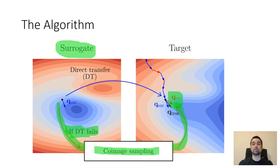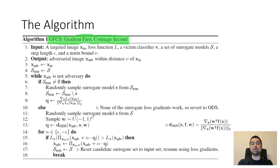So we take a random sample from the span of all of the surrogate's class score gradients, which is called the co-image. You can just think of this as a slightly generalized type of gradient transfer. So we call the method GFCS, which stands for gradient first, co-image second. And this is the entire method in pseudocode.